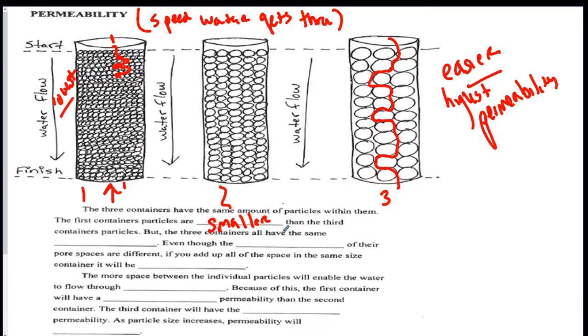But the three containers all have the same porosity. They all have the same pore space. If you remember from the porosity video, you can have three different containers with different sized particles, but they'll have the same porosity. Even though the size of their pore spaces are different, this has bigger spaces than here. If you add up all the space in the same size container, it will be equal. So this is a porosity little paragraph. So now we're going to do the permeability section.